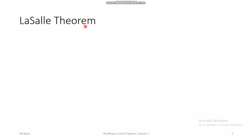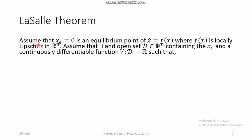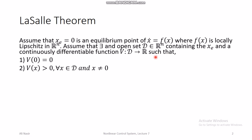The LaSalle theorem states that suppose there is an equilibrium point at the origin of a nonlinear system x̄ = f(x), where f(x) is locally Lipschitz in Rⁿ, meaning x is an n×1 vector and x̄ = f(x) has existence and uniqueness of solution at least locally. Assume there exists an open set D in Rⁿ containing the equilibrium point, and a continuously differentiable function V such that V(0) = 0, V(x) > 0 for all x in D with x ≠ 0, and V̇ ≤ 0.